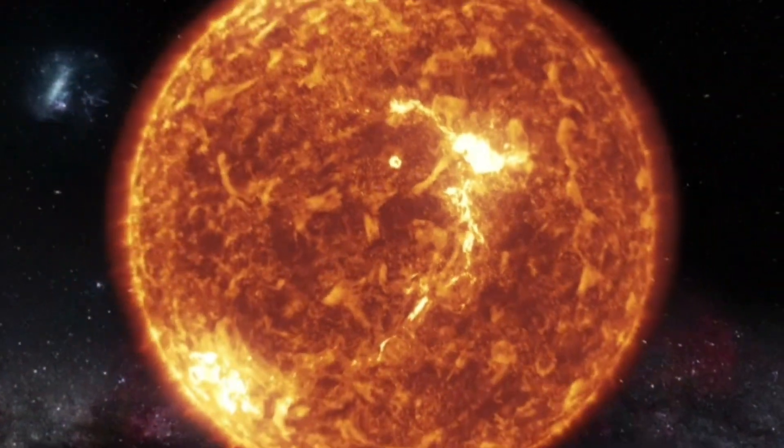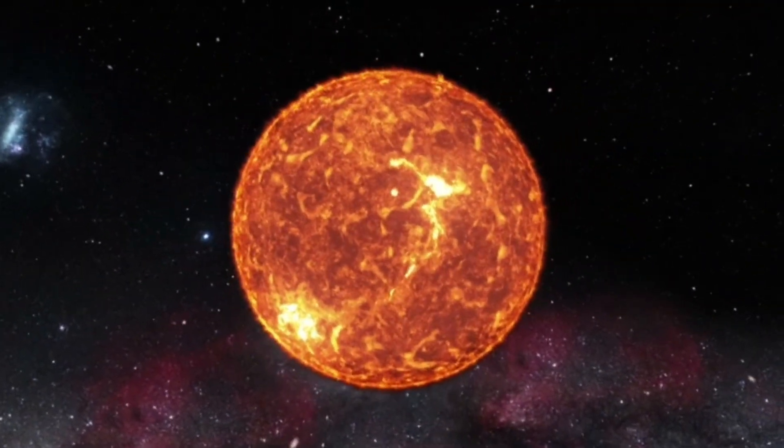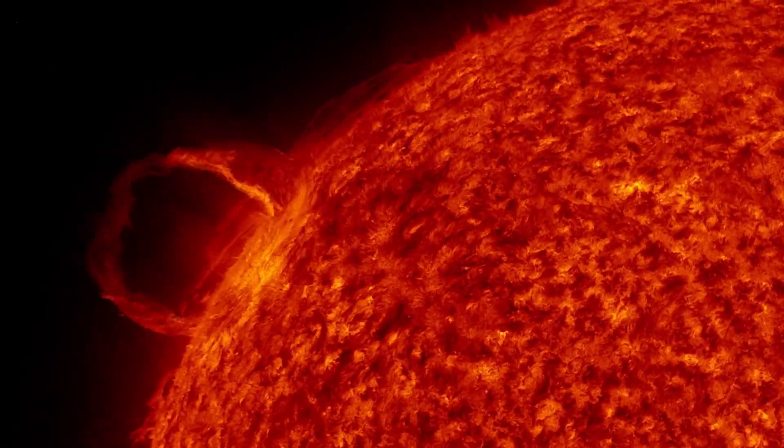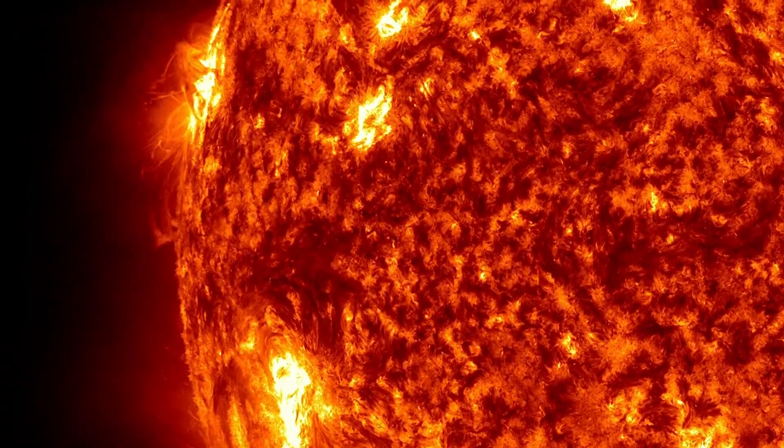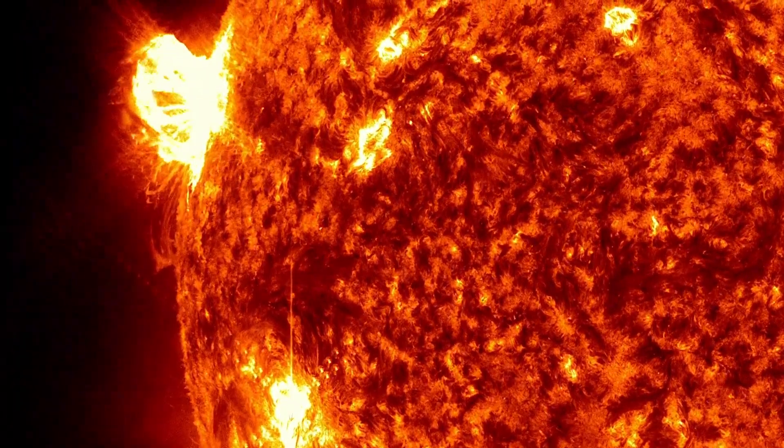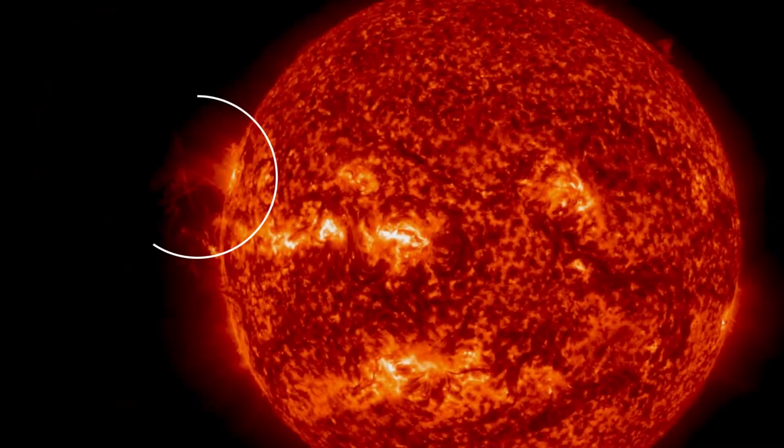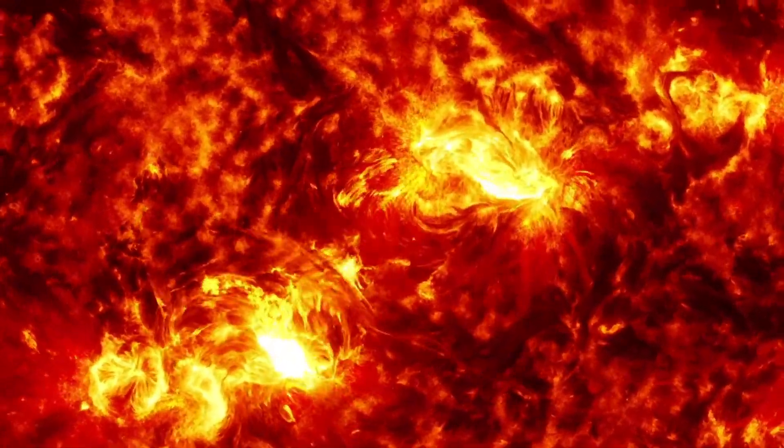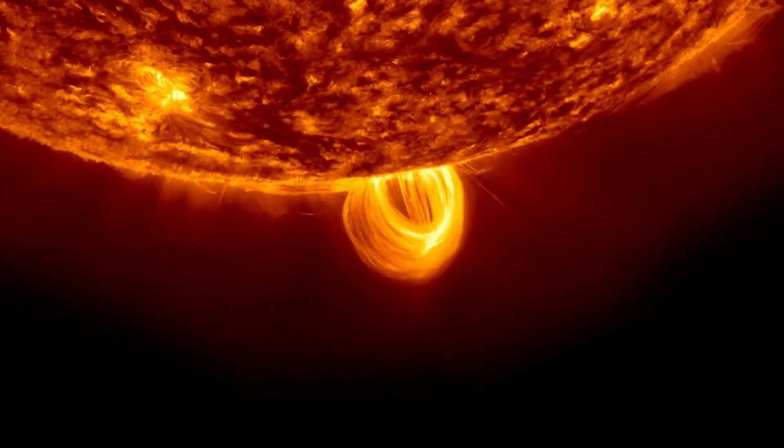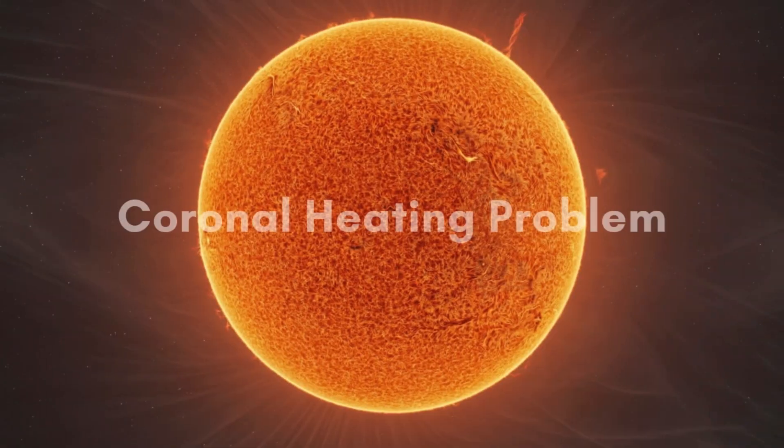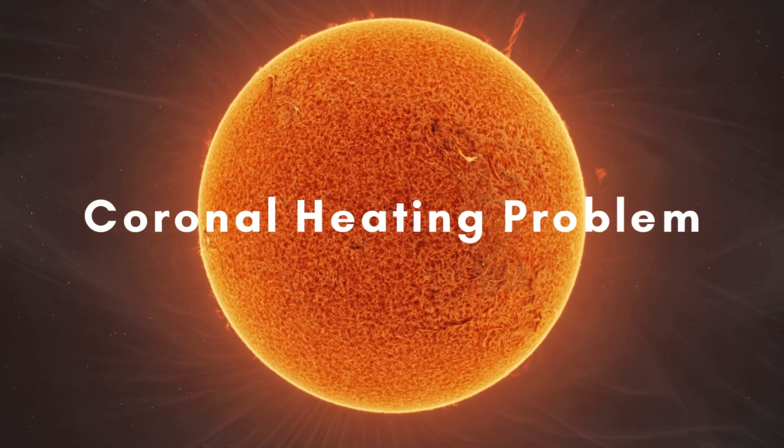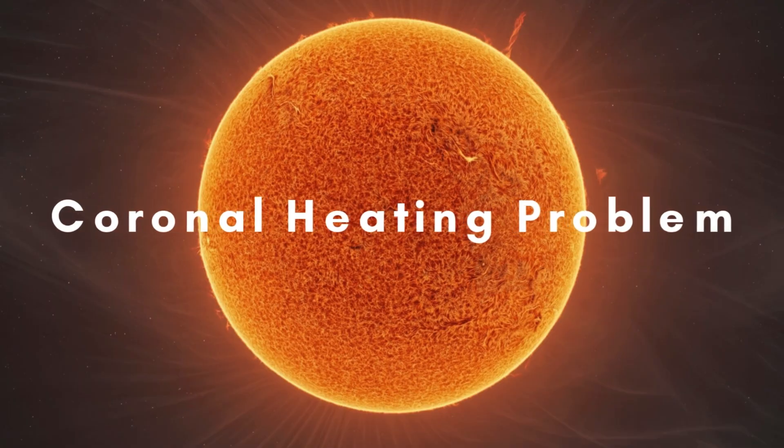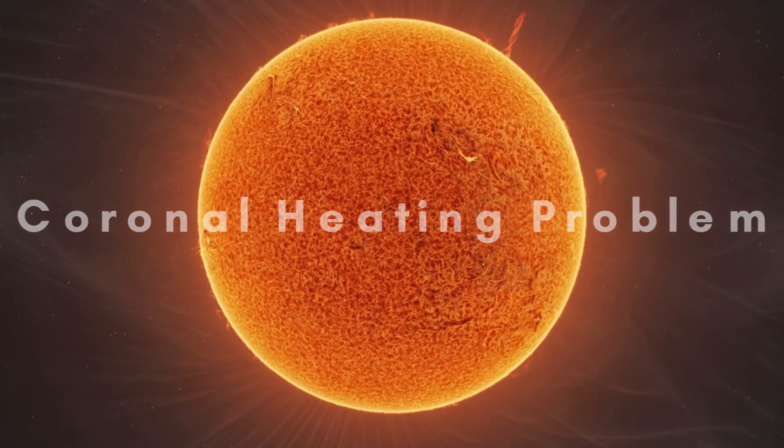Logic says, the farther you get from a heat source, the cooler it should be, right? But not on the sun. Its outer atmosphere, the corona, is hundreds of times hotter than the surface below. It's like walking away from a fire and suddenly getting burned worse. Scientists call this the coronal heating problem. And to this day, no one fully knows what's causing it.